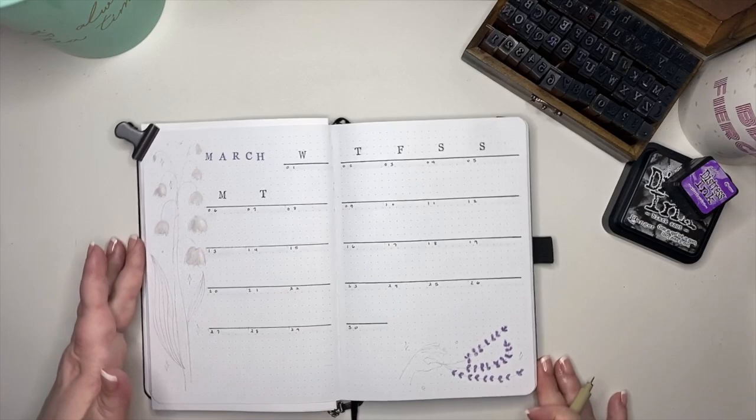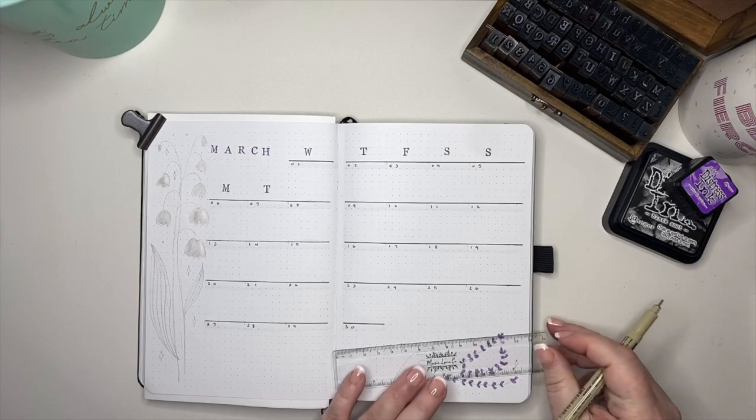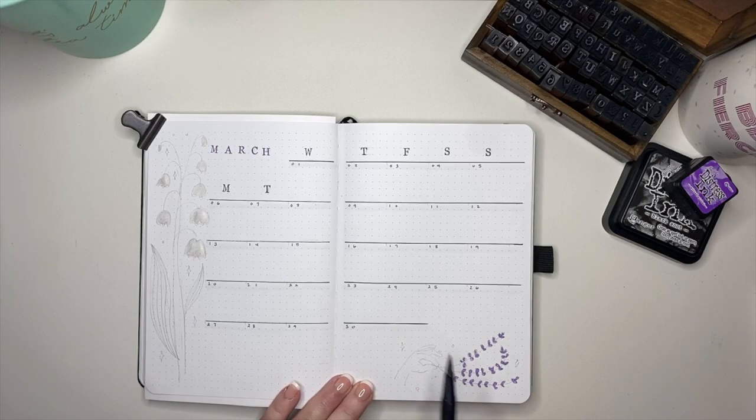I went ahead and added day 31 along with the doodle that's below it, and he can just figure out where he wants to write around that. Honestly, as tiny as he writes, I really don't think it's going to be that much of a problem.